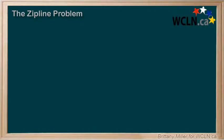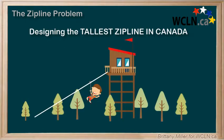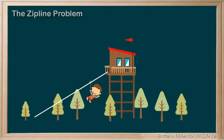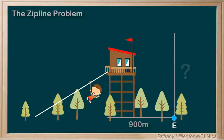Suppose you are an engineer. You're getting paid to design the tallest zipline in Canada, or at least the zipline that has the largest vertical drop. The company already has a pretty tall zipline that they would like to extend. They're thinking of building a new tower at point E, 900 meters further along the ground. They need you to figure out how tall it should be, so that you can order enough building materials.